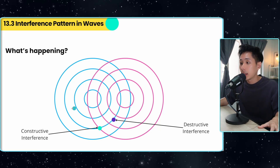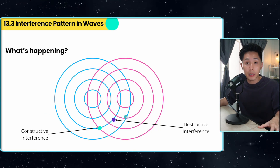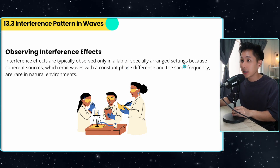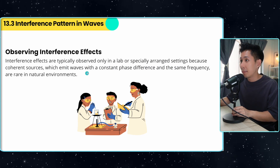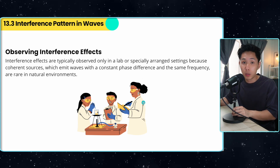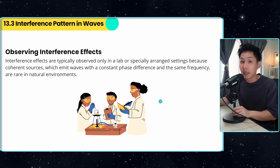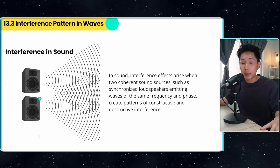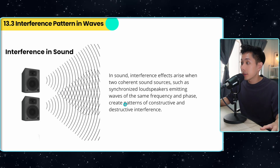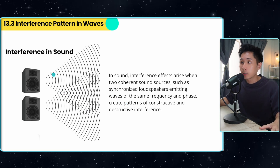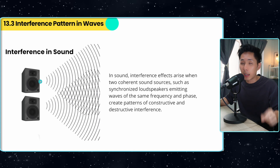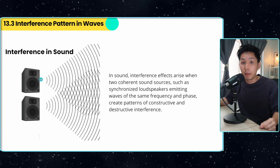Interference effects are typically observed only in the lab or special arranged settings, because coherent sources — which emit waves with a constant phase difference and same frequency — are quite rare in natural environments. That's why we usually carry it out in a lab, like using a ripple tank. For sound waves, they also require coherent sound sources for interference to happen. This is why a lot of PA systems come in pairs of speakers rather than just one, ensuring the sound produced is of the same frequency and phase difference.